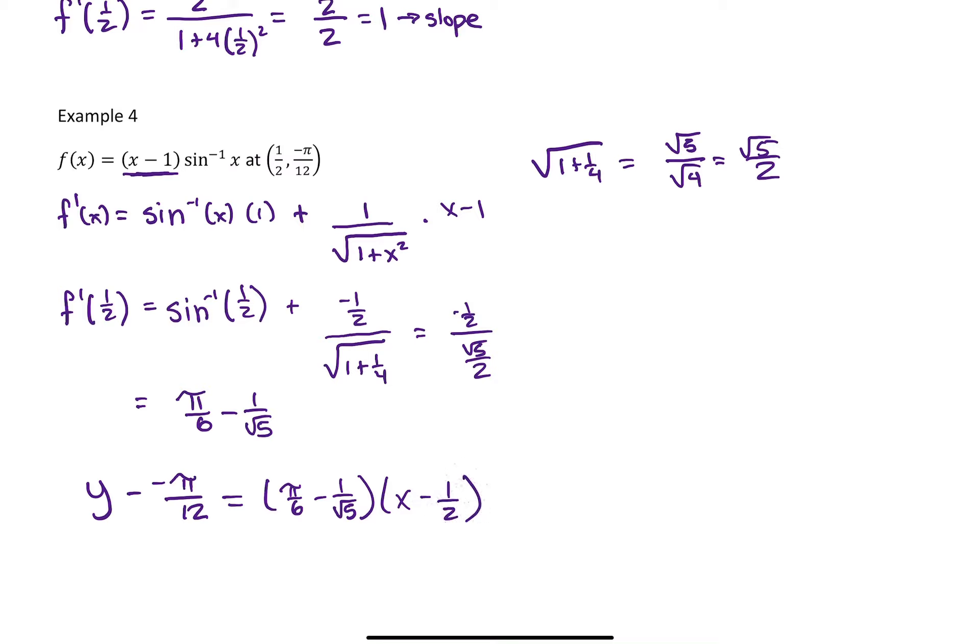The process is exactly the same to write the equation of a tangent line: you need a point on the line and the slope at that point. We don't have to actually simplify further — we're good here.